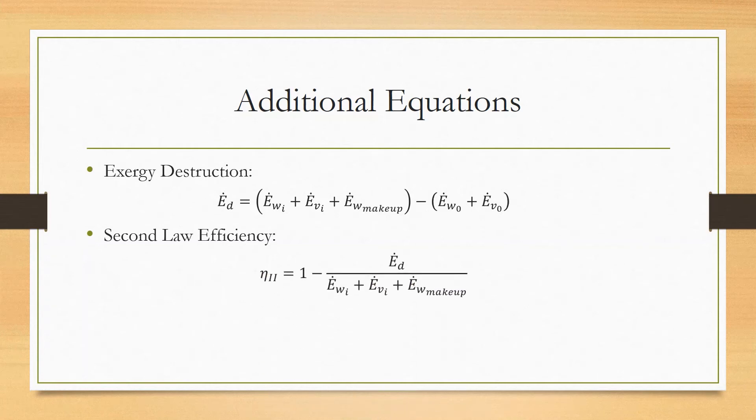Second law efficiency is equal to one minus the destruction of exergy divided by the exergy of inlet water, water vapor, and makeup water.